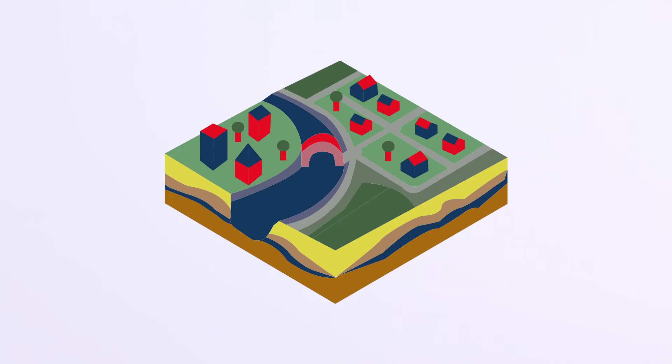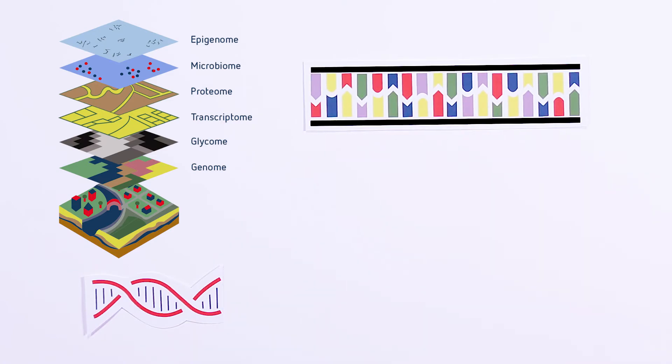Similar to geographical maps, which depict different information layers like height or population density, the cells of a human organism can be locally analysed on different levels. The analysis of DNA and RNA sequences enable the researchers to measure the bacterial composition in the gut and to decode the functional state of specific immune cells.